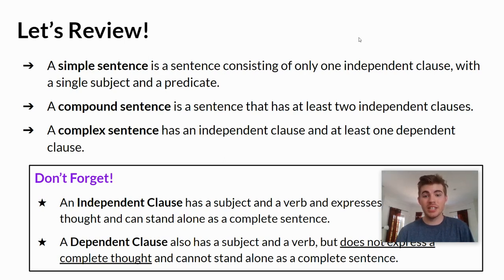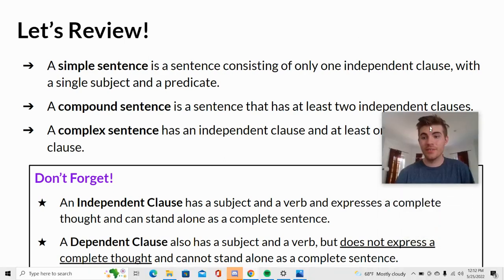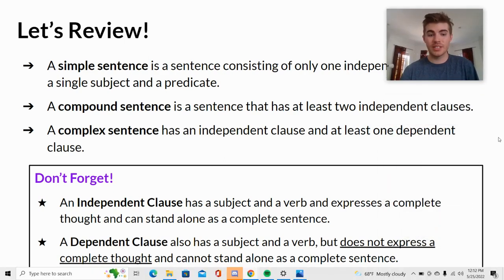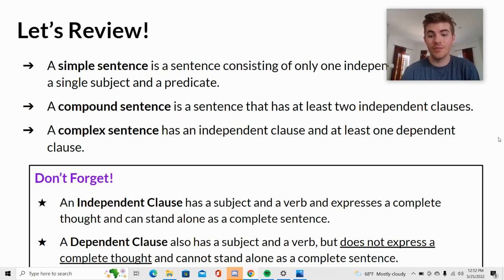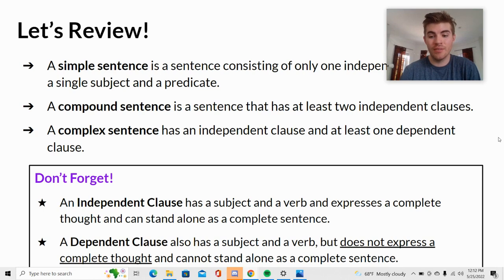Pause here and take some notes on these different types of sentences. An independent clause has a subject and a verb, expresses a complete thought, and can stand alone as a complete sentence. A dependent clause also has a subject and a verb, but does not express a complete thought and cannot stand alone as a complete sentence.